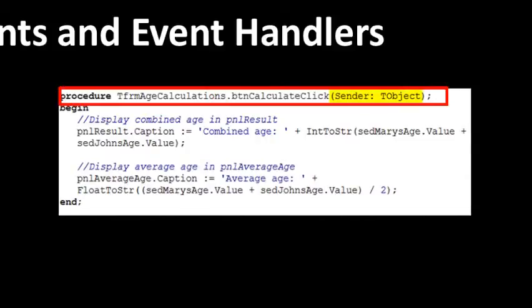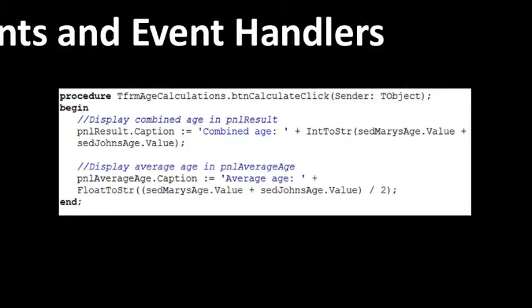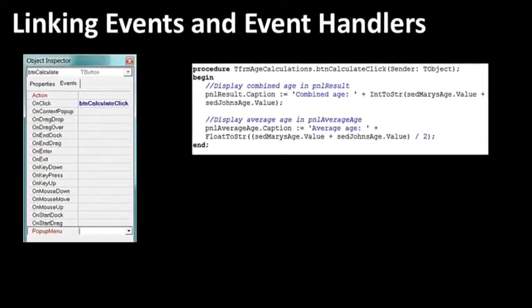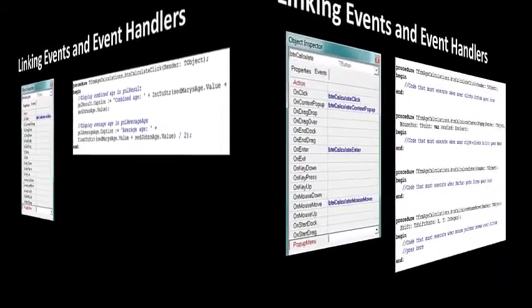After the name, between the brackets, is an argument that reads Sender as TObject. This tells the event handler which object or component triggered the event. You will learn more about objects later. This event handler can also be shared between different components, which is why it is necessary for the event handler to know which component triggered the event. The event handler has begin and end statements, and you must write your instructions between them. In this example we only looked at a button's onClick event, which is the default event. A button also has additional events.